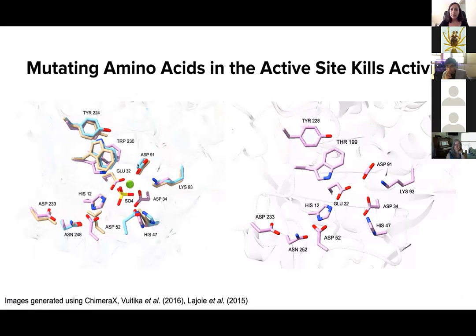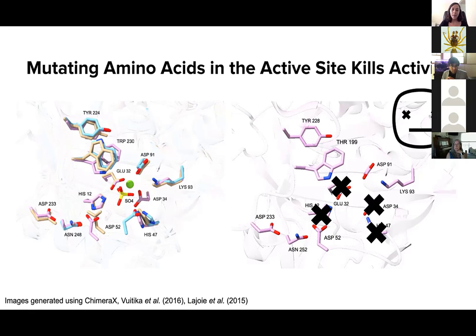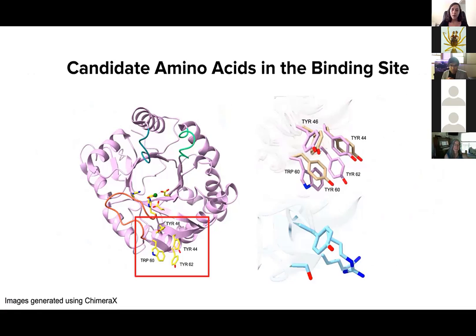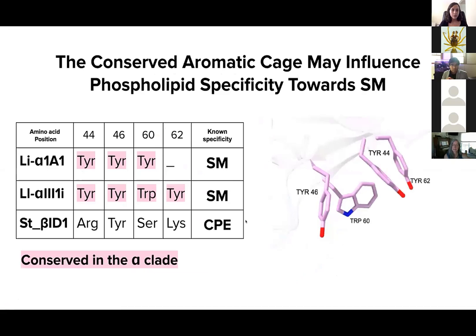Many of the residues in the active site have been targeted for mutagenesis. When these residues are changed, it seems to completely kill protein activity, but doesn't necessarily change specificity from one phospholipid to another. So we look towards the binding site as another possible candidate. In alpha clade proteins, they have a highly conserved aromatic cage located in the binding site, characterized by large, bulky ring structures that form a cage. The conservation of the cage is much more variable within beta clade proteins. The conserved aromatic cage, given that it's highly conserved in alpha clade proteins which are specific towards SM, makes it a great candidate for conferring specificity towards SM within these proteins.